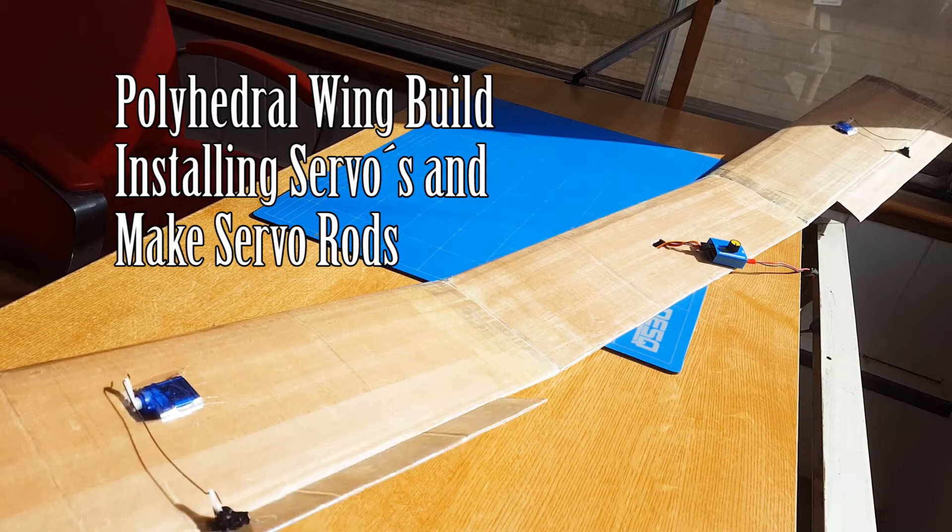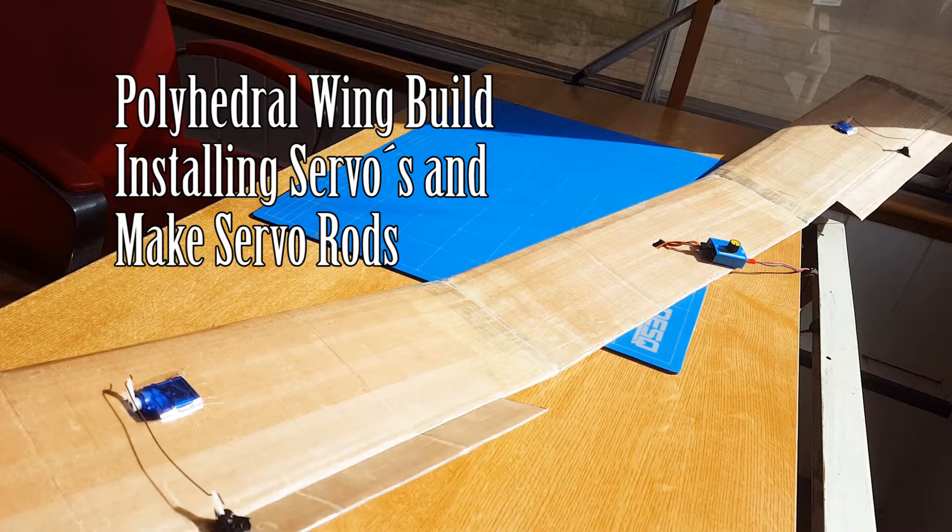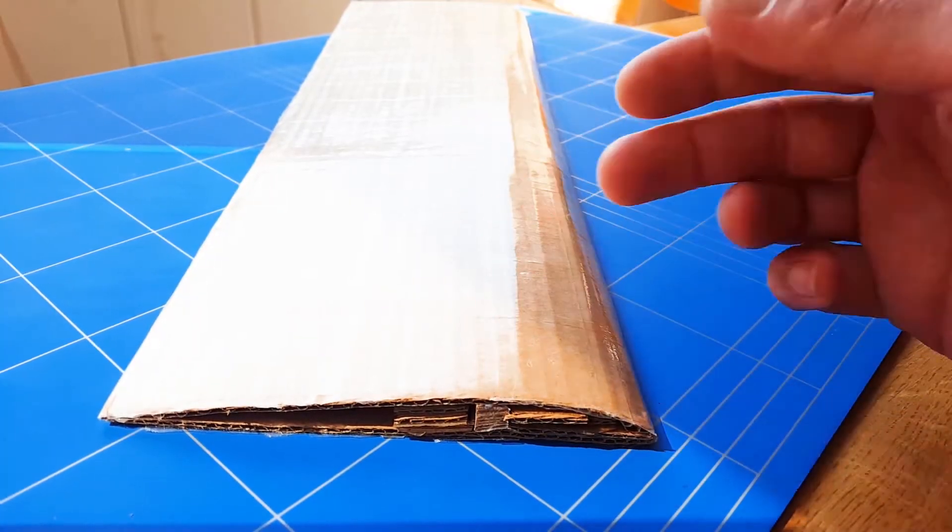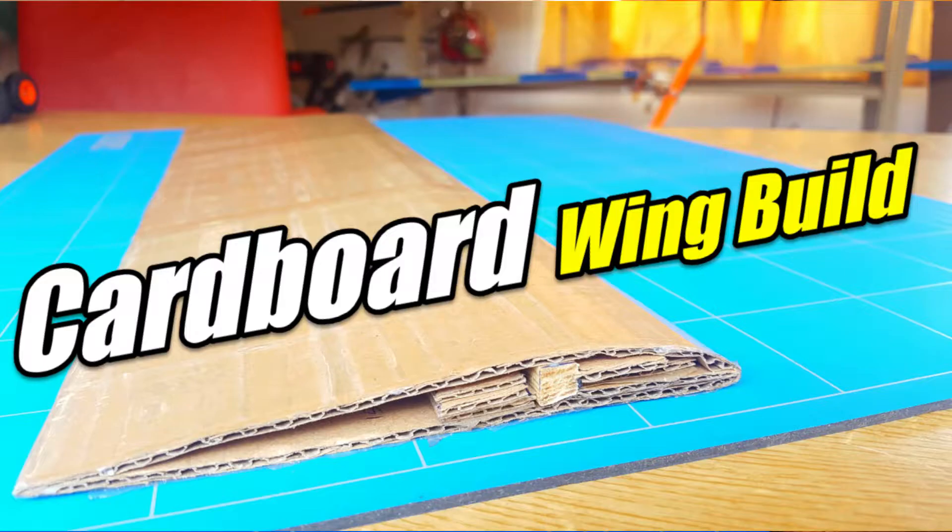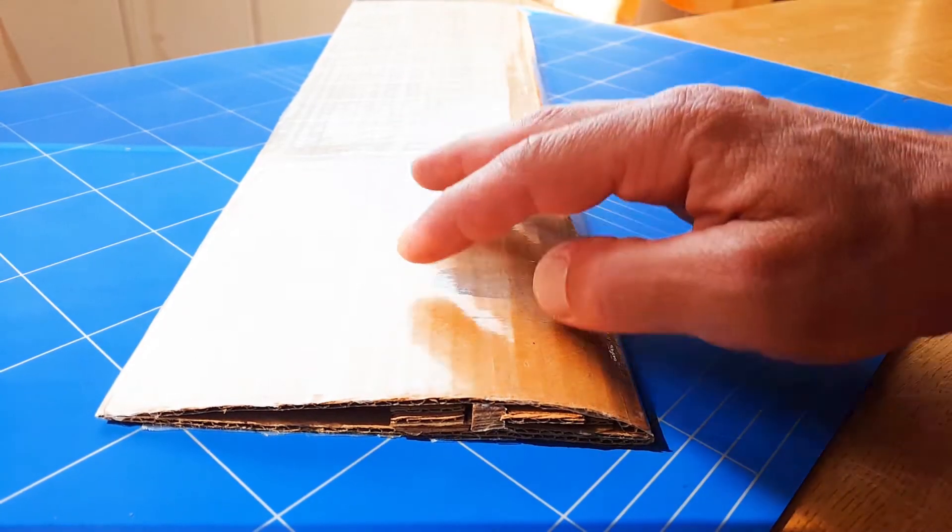Hello everybody, thank you all for watching a new episode of How to DIY RC. How to build a polyhedral wing out of a cardboard RC wing that we built in the last episode, will be linked up over here. How to build a depron wing with cardboard.